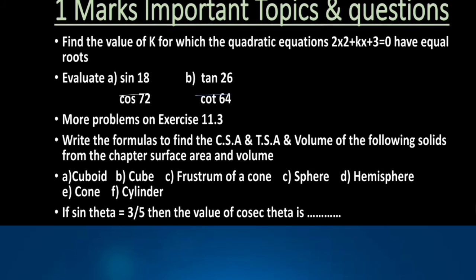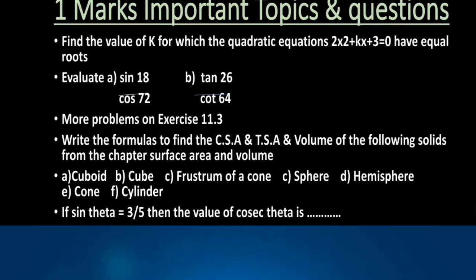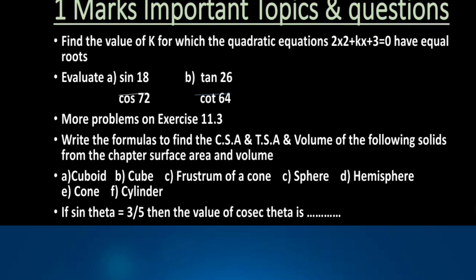Next, evaluate: based on angle they can ask questions like sin 18°/cos 72° or tan 26°/cot 64°. More problems on exercise 11.3, so solve more problems from exercise 11.3, it's important. Next, write the formulas to find the CSA, TSA, and volume of the following solids: cuboid, cube, frustum of a cone, sphere, hemisphere, cone, cylinder. Practice, one question they will ask in the examination. Next, if sin θ = 3/5, then the value of cosec θ is. This is also one of the most expected questions.